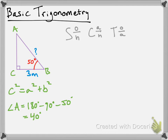The way SOHCAHTOA works is you look at an angle — in this case our 50-degree angle — and identify the opposite, adjacent, and hypotenuse. The opposite side length is across from the angle. The adjacent side length is next to the angle but is not the hypotenuse. The hypotenuse is either the longest side or the side opposite from the right angle.